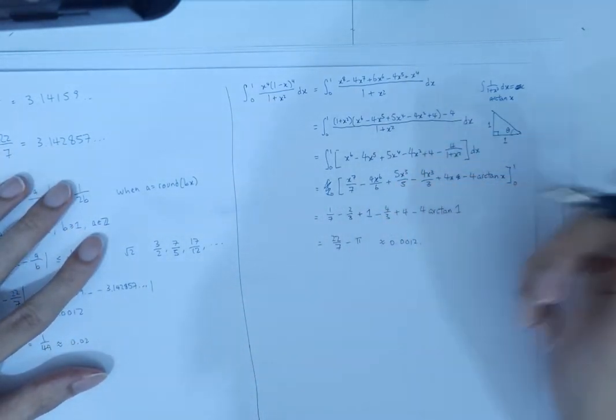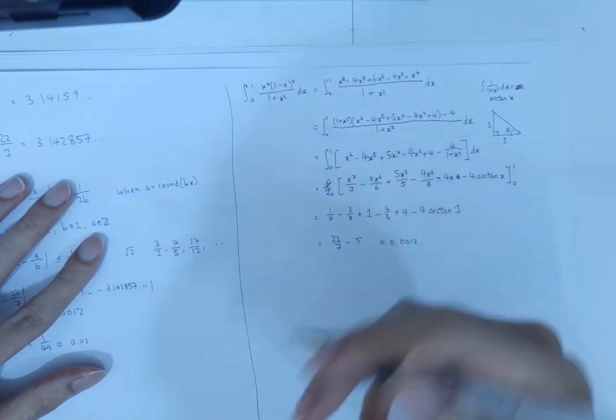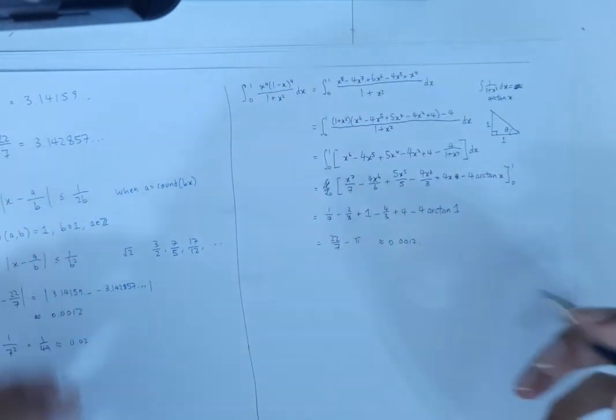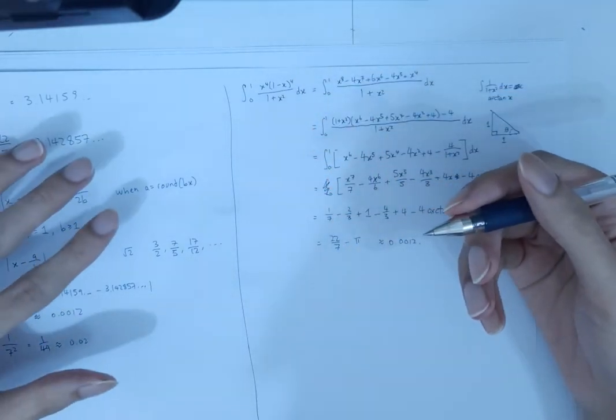So why is this value so small? We can look at what happens in the numerator and what happens in the denominator, and from there we can see a reason that this value happens to be as small as it is.